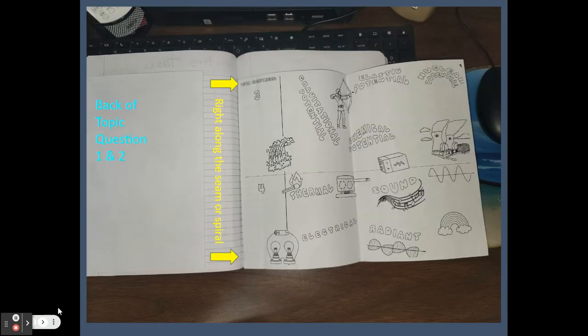Now you're going to get the questions, topics three and four. Get that one ready, fold it the same way, and put that glue on the back side. And this is the back of topic question one and two. We folded that over, and we're going to put that right along the seam or right along your spiral.